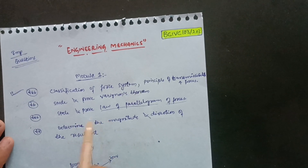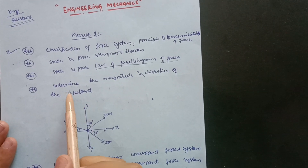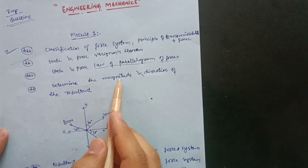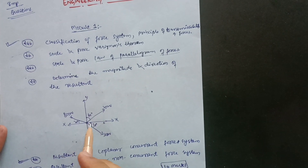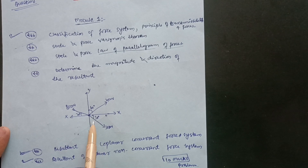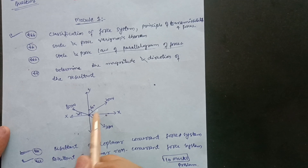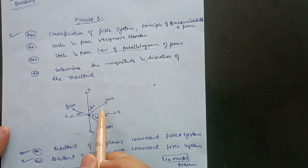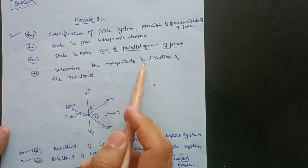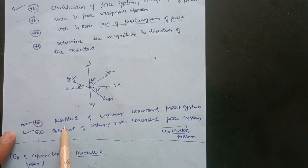You also have to focus on this problem: determine the magnitude and direction of the resultant. Problems will look like this — forces at directions such as 30 degrees from the x-axis downward, with forces of 300 N and 200 N. You just need to break these into two components — horizontal and vertical — then calculate the magnitude and direction of the resultant. These are simple problems to focus on.